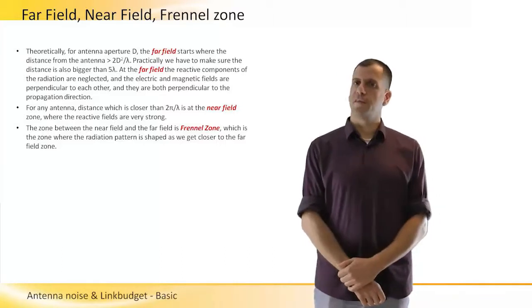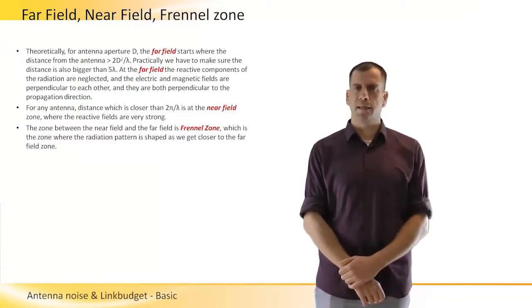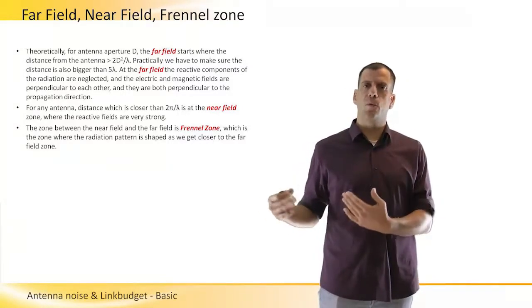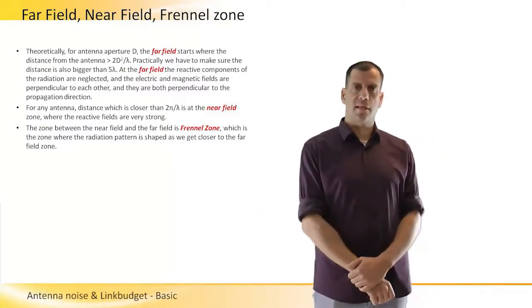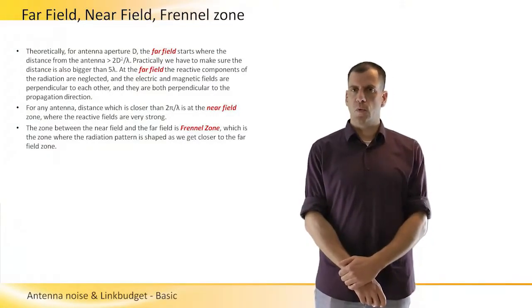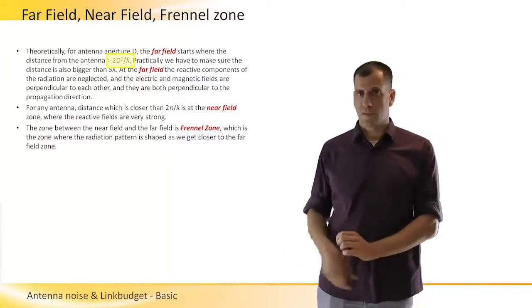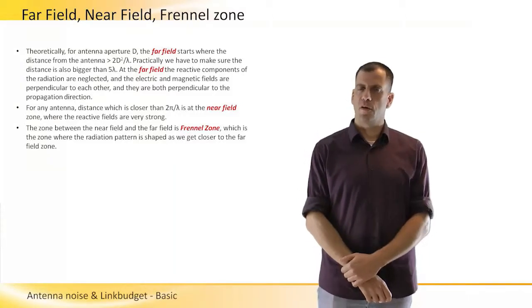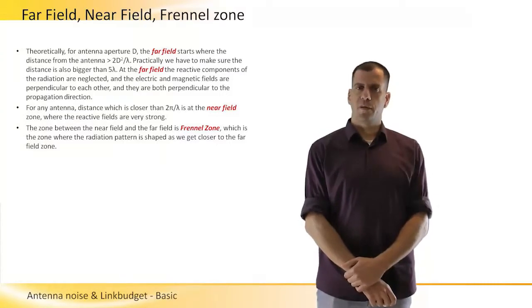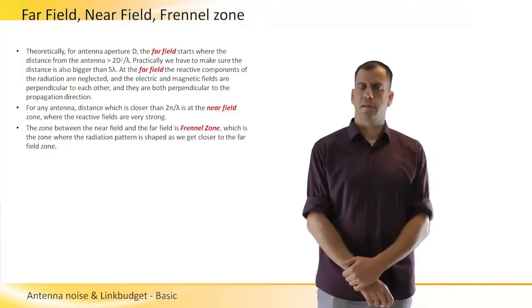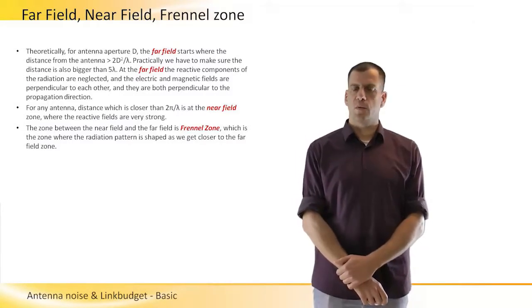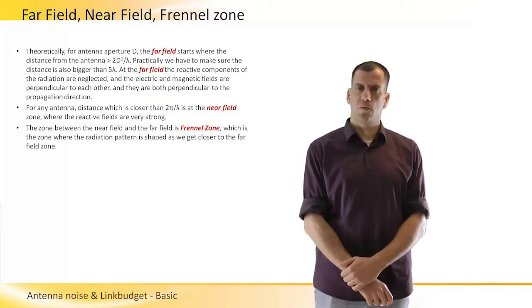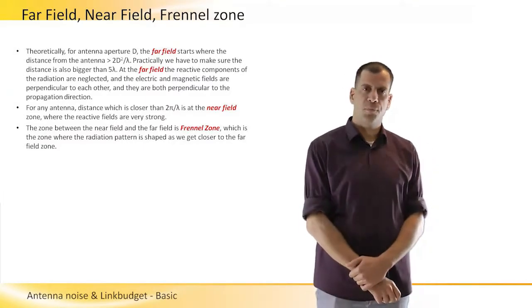The far field is the zone where the electric and magnetic fields are perpendicular, as discussed before. It is far enough from the antenna that we actually get a planar wave. This starts at ranges longer than twice the antenna aperture squared divided by the wavelength. We have to be careful here — if we have very small antennas, this number might be very small. For example, a monopole antenna with a wavelength four times its length would theoretically place the far field very close to the antenna.